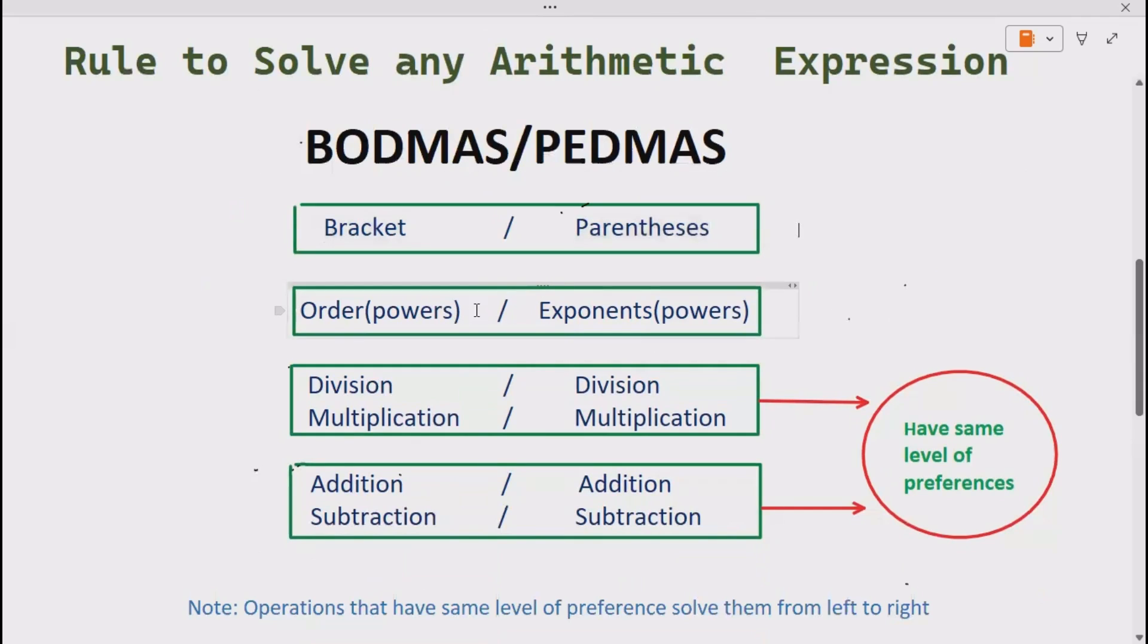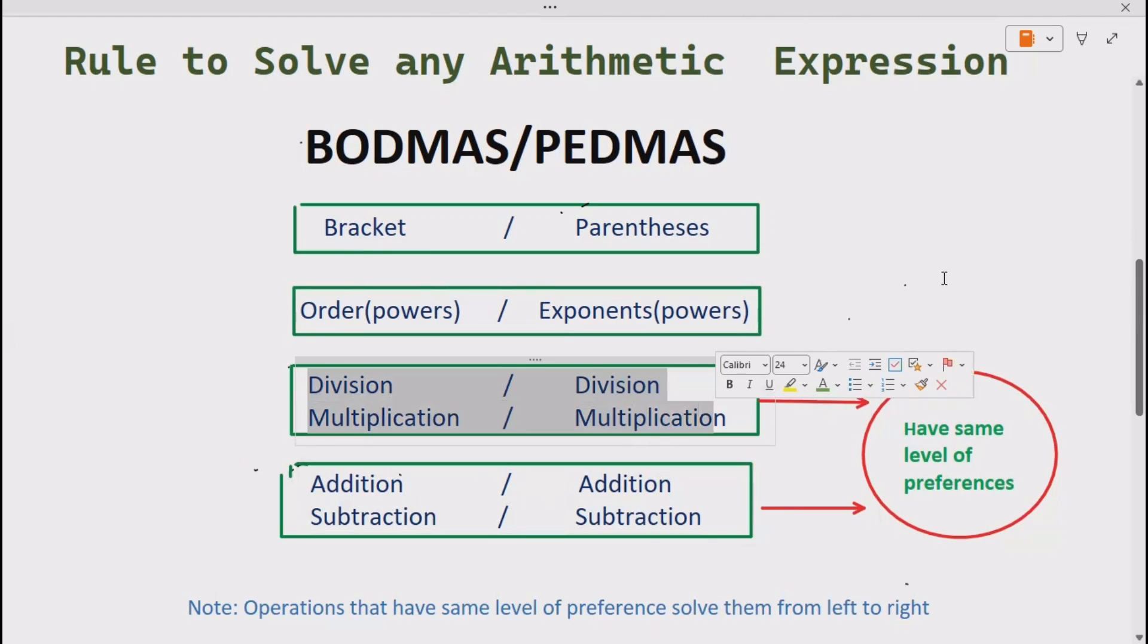Then solve orders, i.e., powers and exponents, and then do division, multiplication, and then addition, subtraction. Remember, multiplication-division and addition-subtraction both have the same level of preference. What does it mean? It means whenever you are solving an expression and division-multiplication occur at the same time, solve that operation first that comes first, going from left to right.